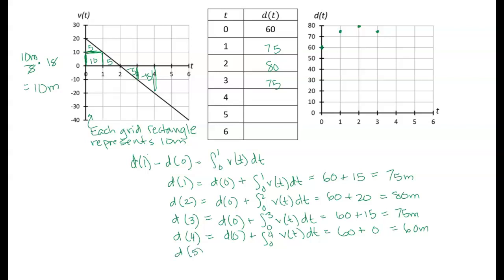Let's look at t equals 5. We take the initial displacement and integrate the velocity curve from 0 to 5. We get 60, and at t equals 4 we were at 0 net displacement. The next trapezoid is about minus 25. So we went up 20, down 20, and now down another 25, giving a total of minus 25. We subtract 25 from 60 and get 35 meters. So at t equals 5 we're at 35 meters.